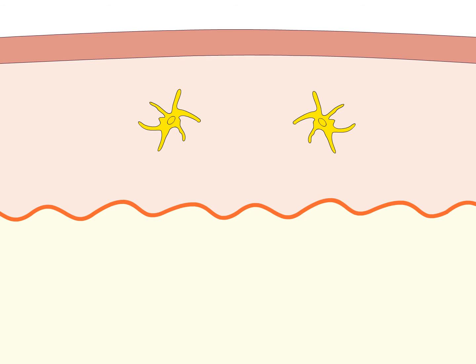There, the immature dendritic cells lie in wait for pathogens entering the body through sites of injury, for example.